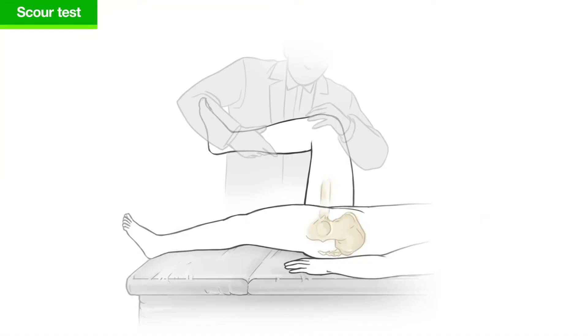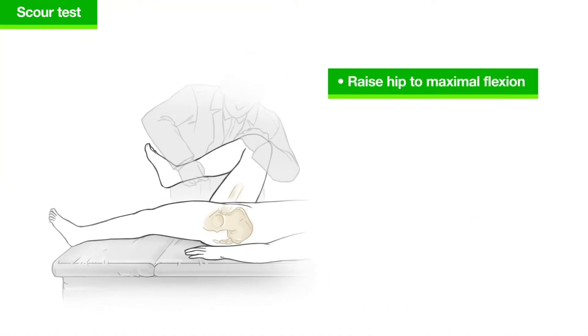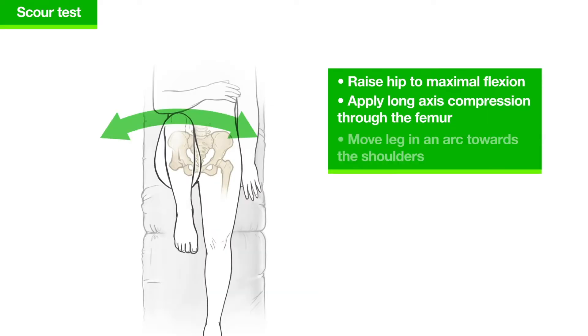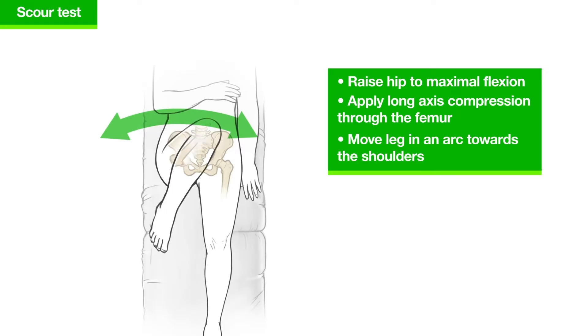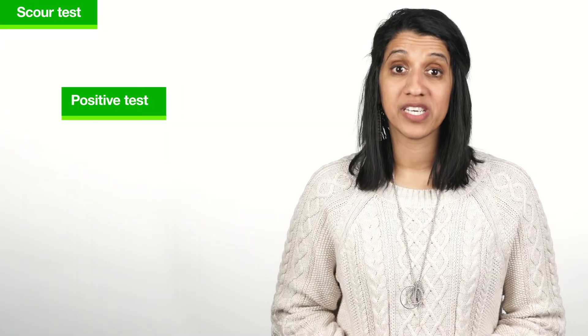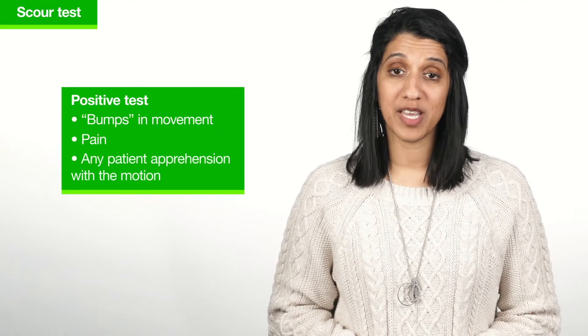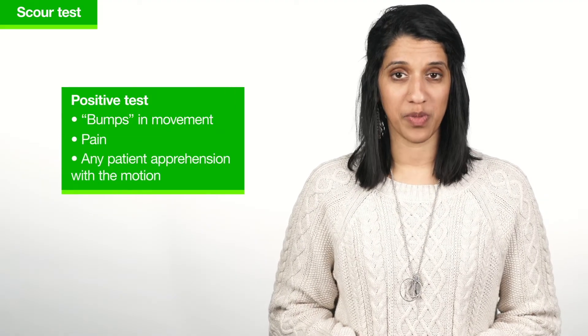An additional test to perform when the patient is supine is the scour test. Raise the hip to maximal flexion, apply long axis compression through the femur, and continuing the compression force, move the leg in an arc toward the shoulders. A positive test consists of bumps in movement, pain, or any patient apprehension with the motion.